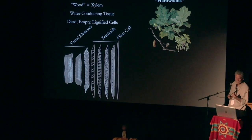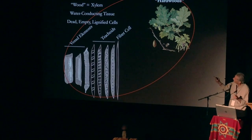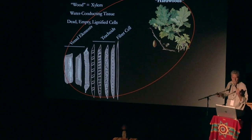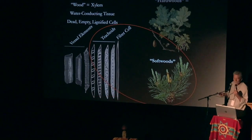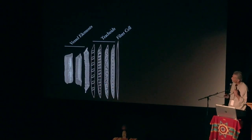Hardwoods and softwoods differ in their composition of these cell types. Hardwoods have all of those tracheids and vessel elements. Softwoods only have the tracheids, which is interesting.